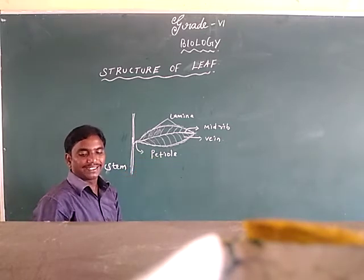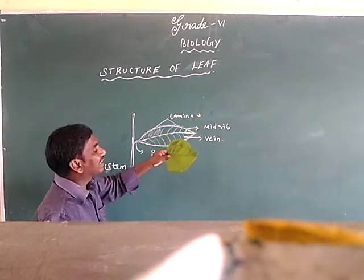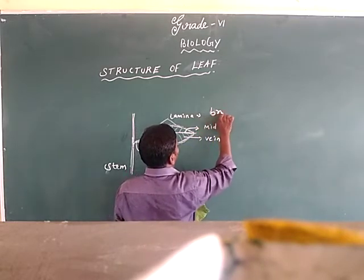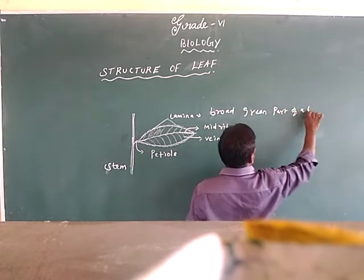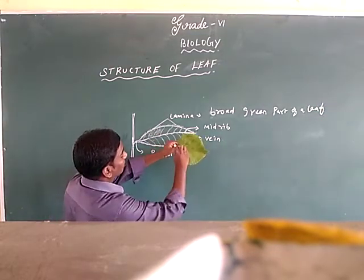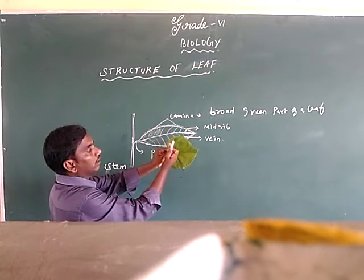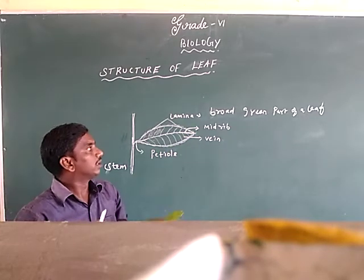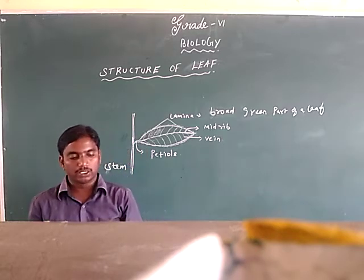Next is the lamina. The lamina means nothing but the broad green part of your leaf. The broad green structure of the leaf is called the lamina. Lamina is the broad green portion of the leaf.